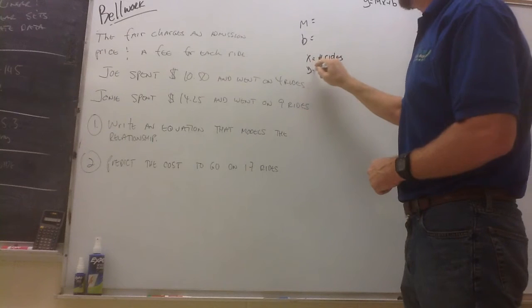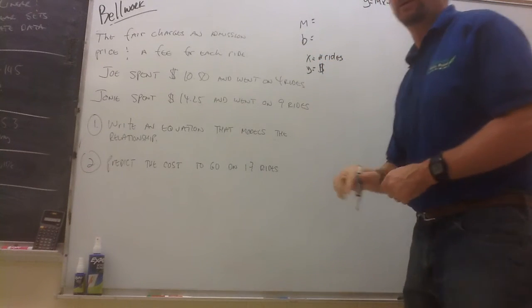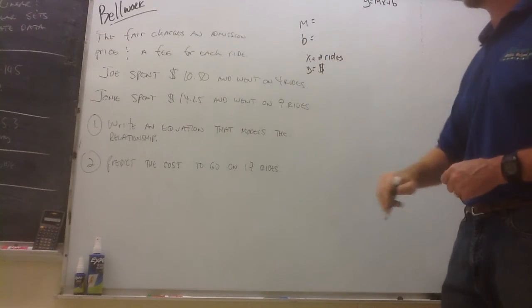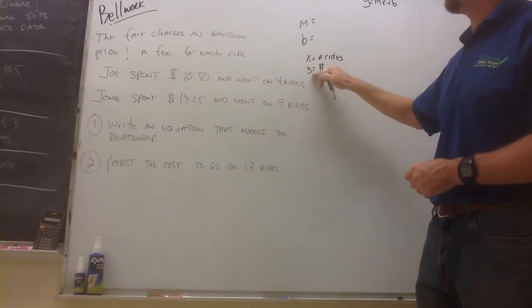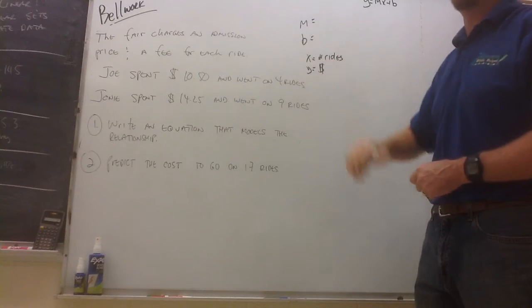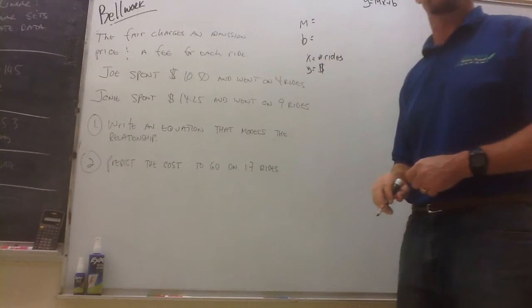And we'll have our y value be the total cost. Because the total cost is dependent on the number of rides. Okay, so there's our dependent variable or our output or our y value, and our input or our x value is the number of rides.